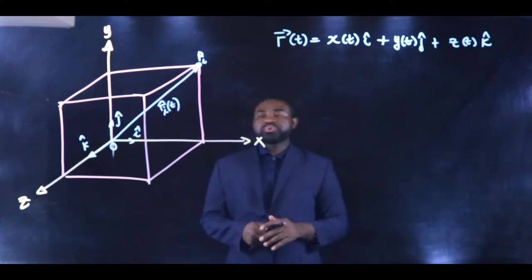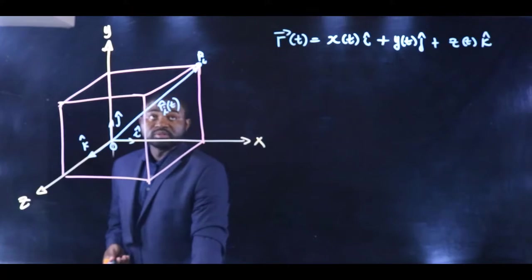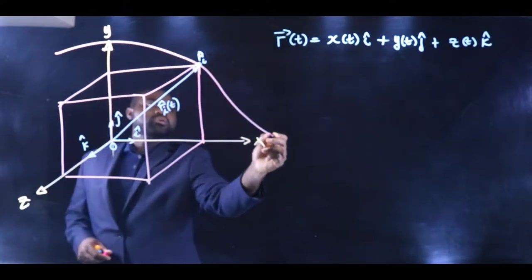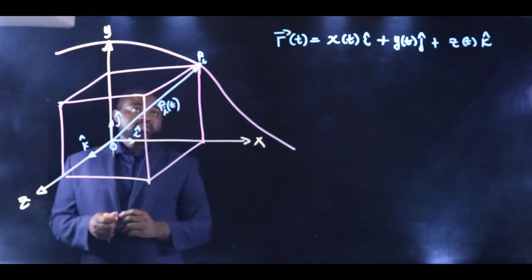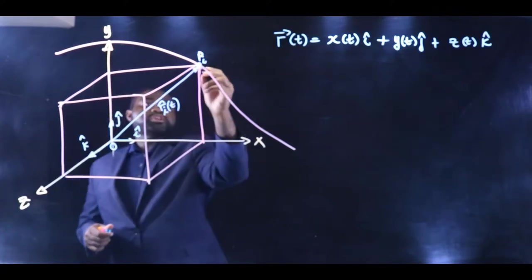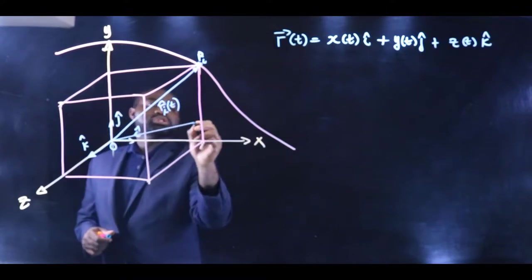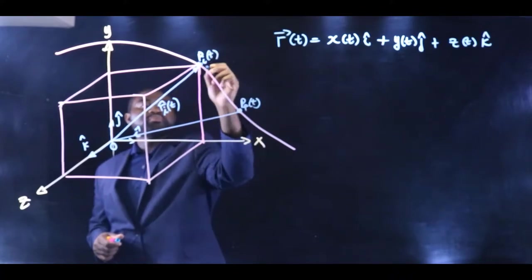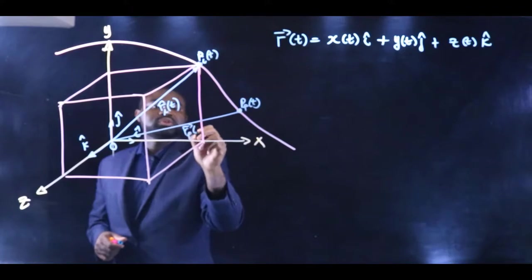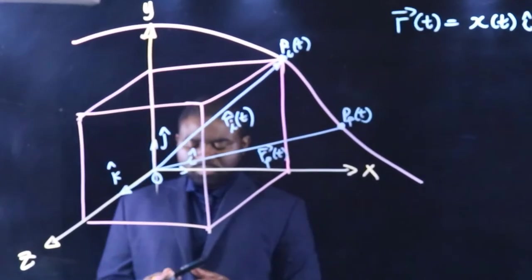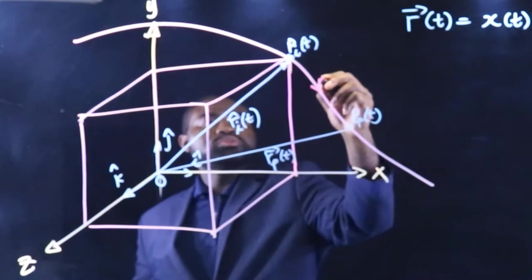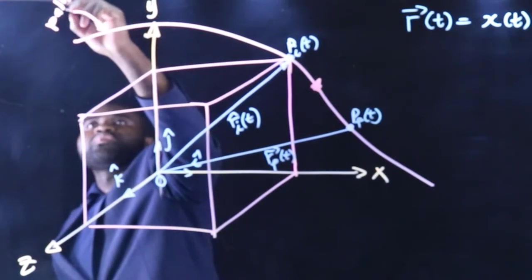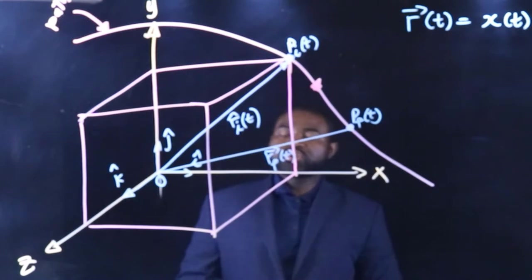Now, let's suppose that this particle moves along a path like that. Let's say it moves from this position P initial to a new position P final, which is a function of time. So, you have here R final, still a function of time, and this is the direction of motion. We call this the path or the trajectory of the particle.